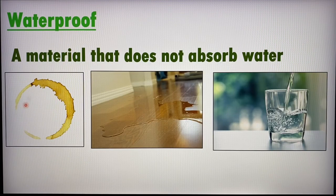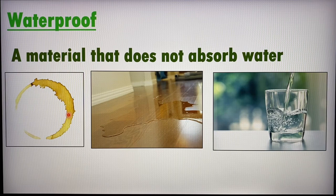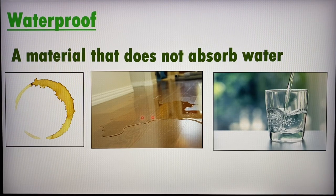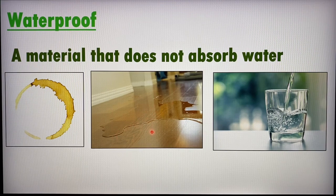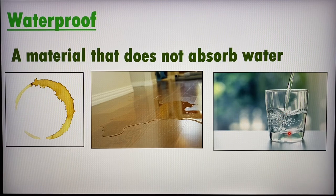Here is a picture of a coffee stain — a good example of a material that is not waterproof; usually paper is not waterproof. Laminated wooden flooring, although made of wood, has a layer of plastic over it, so water flows over it without being absorbed — that's an example of a waterproof material. Glass cups are also waterproof; otherwise water would flow out and you would not be able to drink.